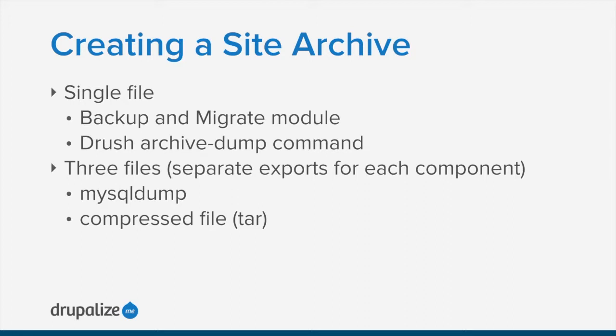When creating a site archive, you're getting all those components together into one place to import them. There are two ways of handling file uploads in Pantheon. One is creating a single site archive file — you can do that with the Backup and Migrate module, or using Drush with the archive-dump command. Both give you one file containing the code base, database, and files directory. Alternatively, in Pantheon you can do it in three separate files, uploading each component individually via the UI or Terminus.